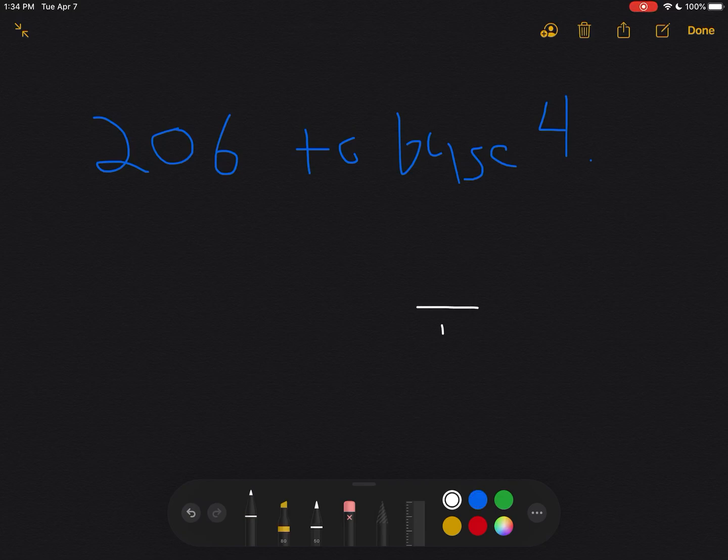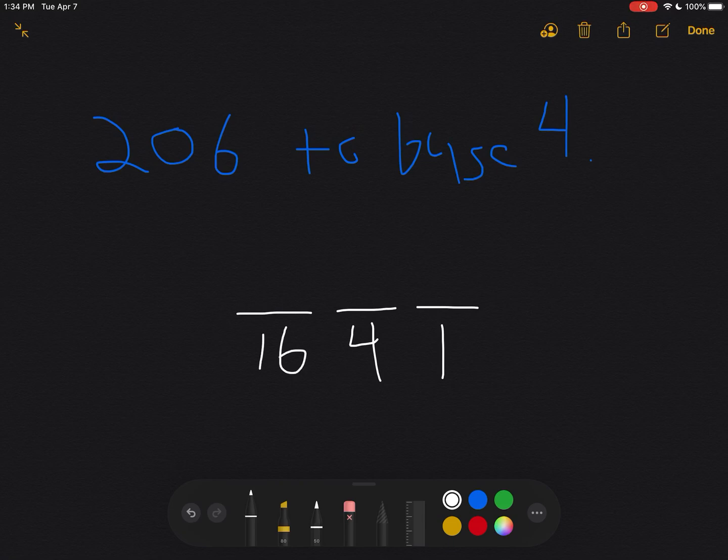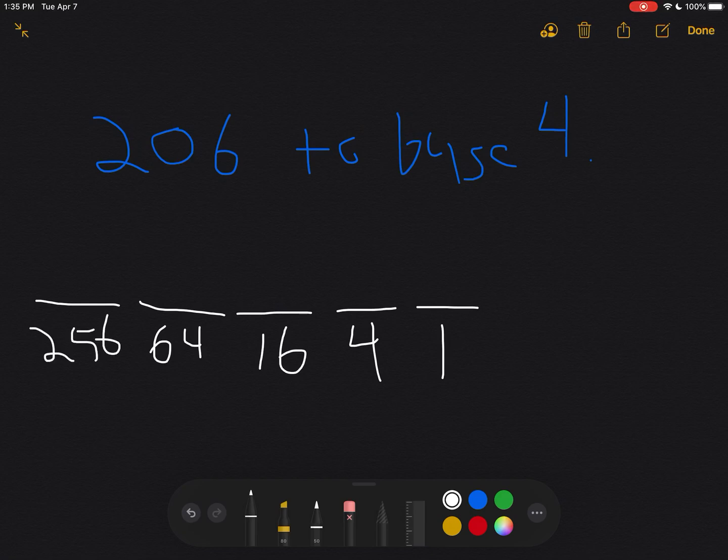So let's look at those place values. So here we have the ones place, and then the fours place, and then the four squared place. Four squared is 16, so I'm going to write 16 there. Four cubed is 64, and then four to the fourth is 256. Okay, so one, four, four squared is 16, four cubed is 64, four to the fourth is 256.